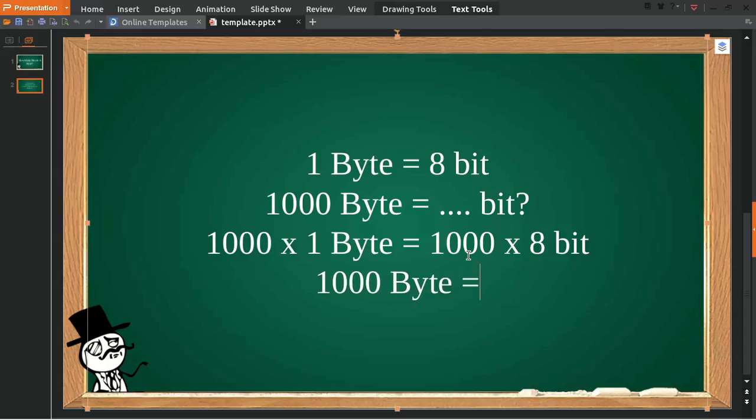So 1000 byte is equal to 8000 bit. That's the answer to the question. If you have any further questions you can put it in the comment box. Thank you for watching and see you again.